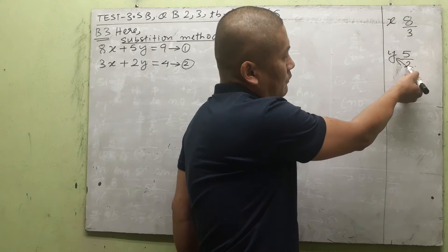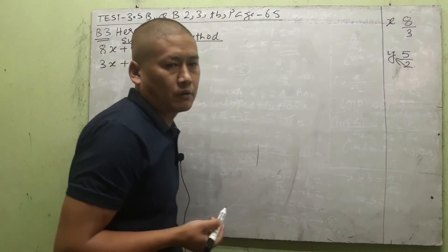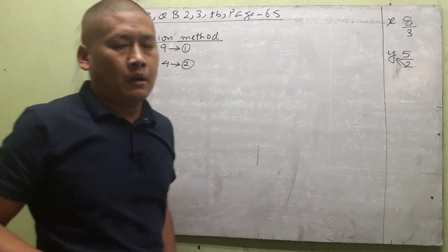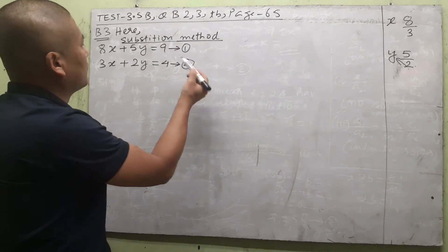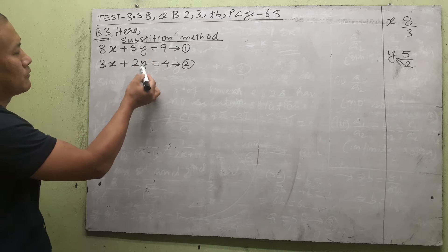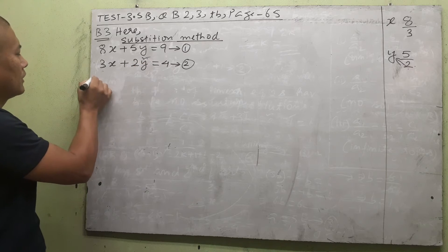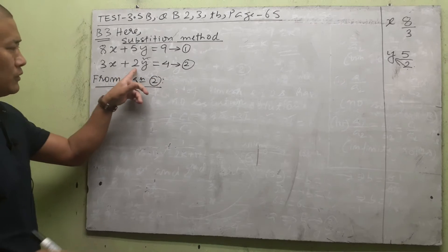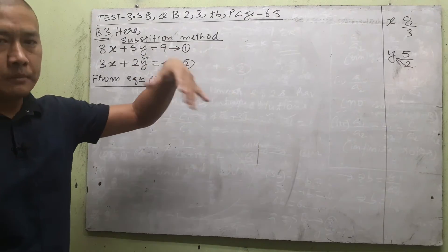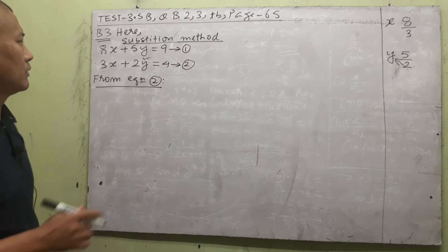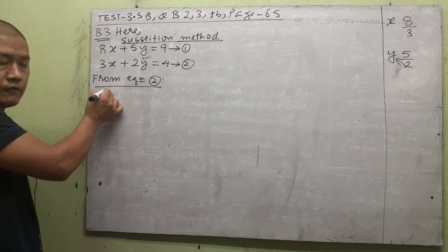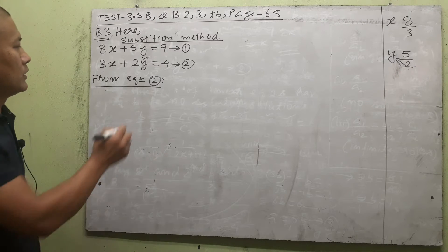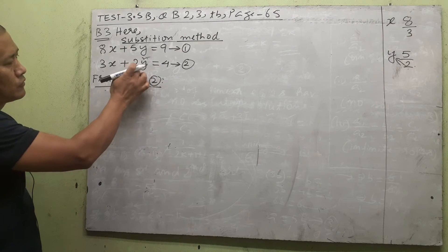Since 2 is the smallest coefficient, we choose to work with the 2y term. Taking the smallest coefficient makes it easier because that small number will appear in the denominator and simplifies the solving. The 2y term is contained in equation 2, so we take from equation 2. It's not a rule but it's going to be easier, so we are choosing to take from equation 2.